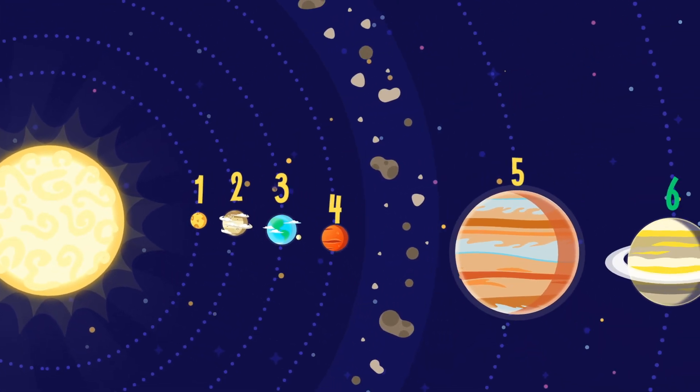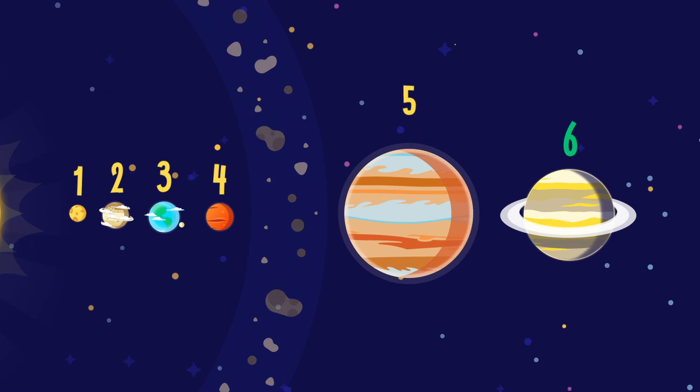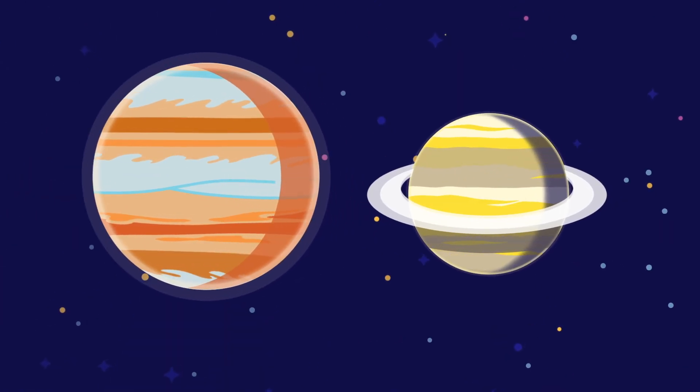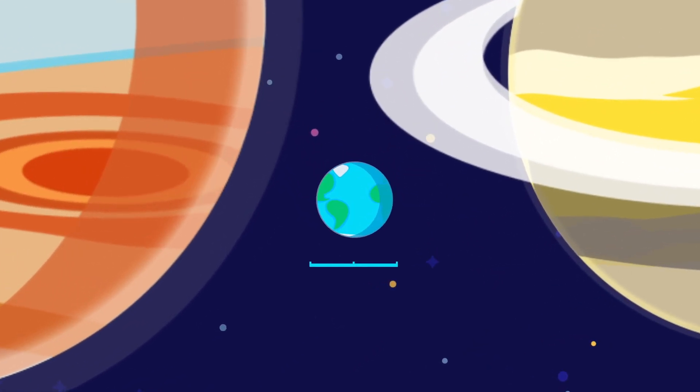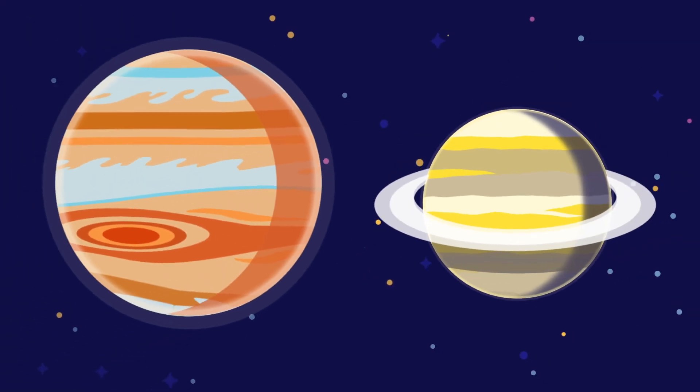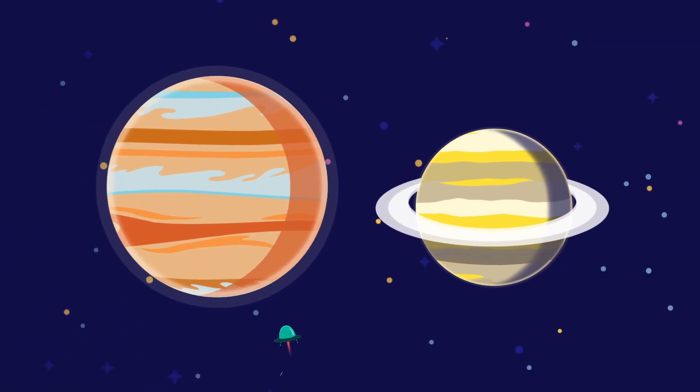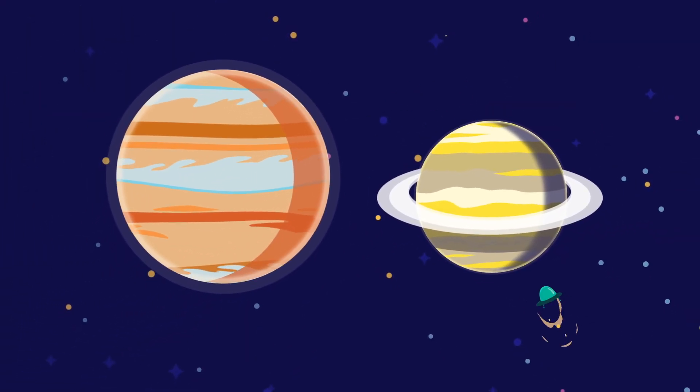Saturn is the sixth planet from the Sun and the second largest planet in the solar system. It belongs to the so-called gas giants, which consist mainly of various gases and do not have a solid surface.